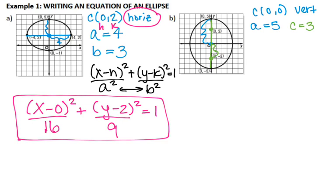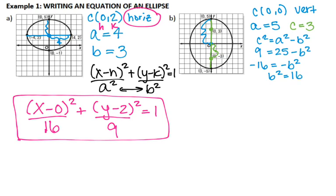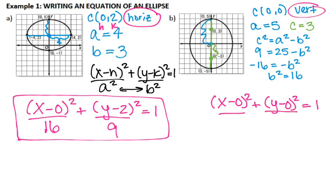We don't actually have B, so I'm going to use the formula we had to find the foci to solve for B. That formula is C² = A² − B². So: 9 = 25 − B². Subtract 25 from both sides: −16 = −B², so B² = 16. I'm not going to take the square root of 16 because I need B² in the denominator anyway. My center was at the origin, so: x² over 25 plus y² over 16 equals one — with A² underneath Y since I have a vertical major axis.